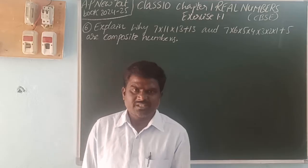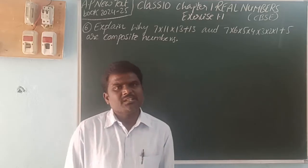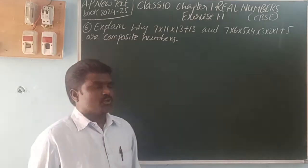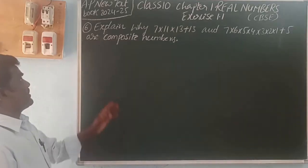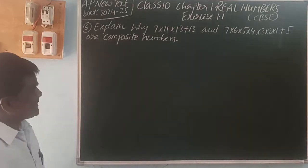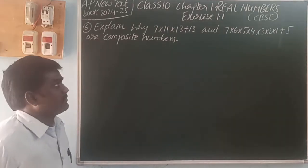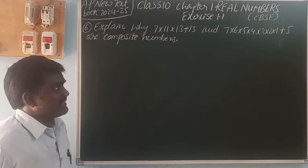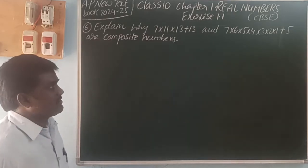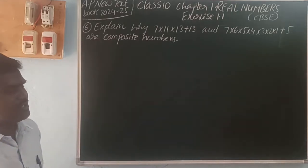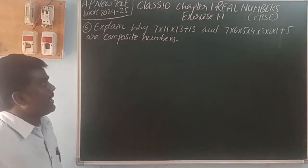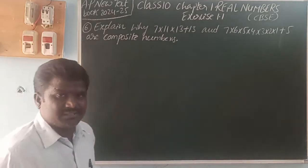It is a new syllabus for AP, CBSE-based syllabus 2024-25. So, the sixth question: explain why 7×11×13 + 13, and 7×6×5×4×3×2×1 + 5, are composite numbers.